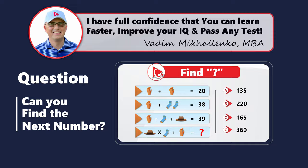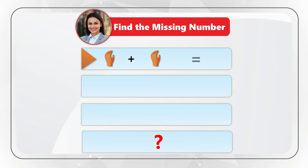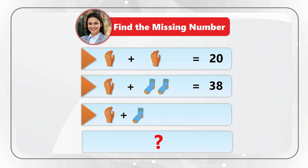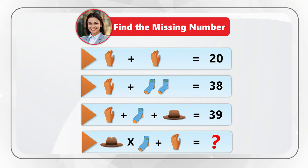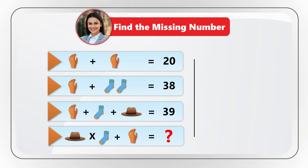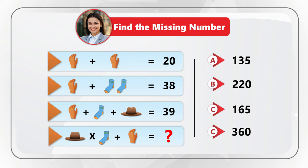I have a surprise for you. You need to solve the expression and find the missing number. You have three full expressions: glove plus glove equals 20; glove plus two socks equals 38; glove plus sock plus hat equals 39. And the last expression where you need to calculate the missing number is hat multiplied by sock plus glove equals the missing number. The choices are A 135, B 220, C 165, and D 360. Once you calculate it, please make sure to post it in comments. This would allow me to give you my feedback. Thanks for participating and good luck.